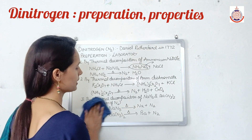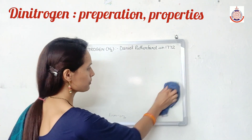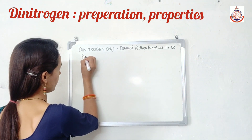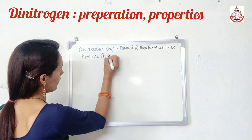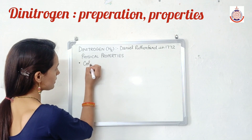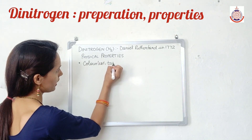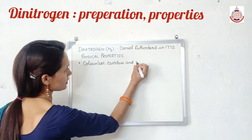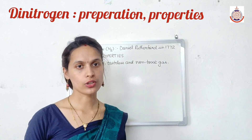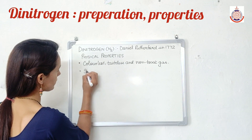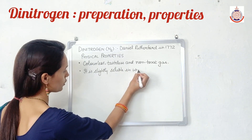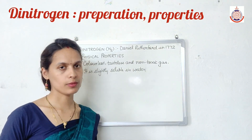Now we will study the physical and chemical properties of dinitrogen. Starting with physical properties: dinitrogen (N2) is a colorless, tasteless, and non-toxic gas. It is slightly soluble in water due to its covalent nature.